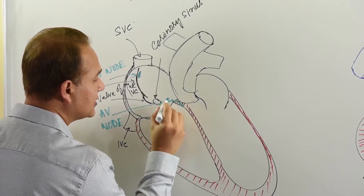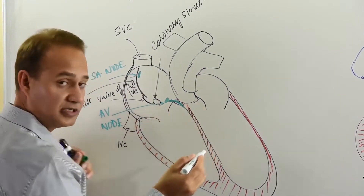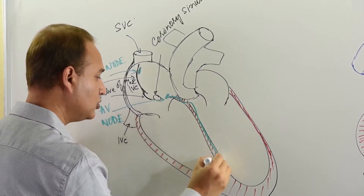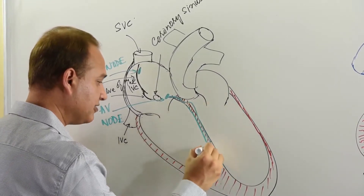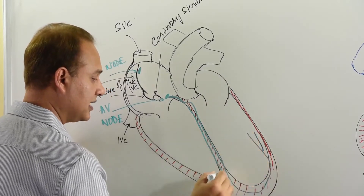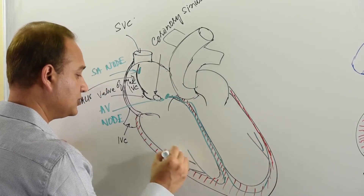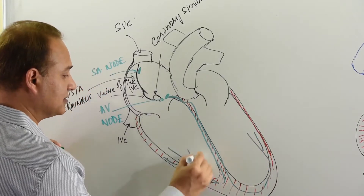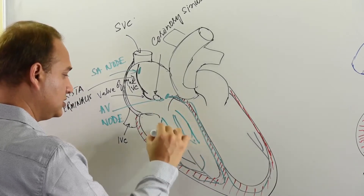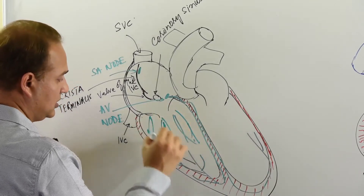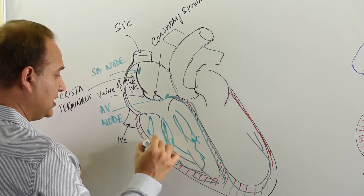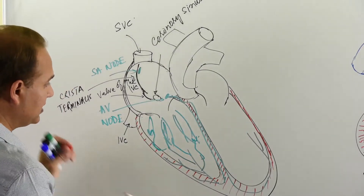Then we have the bundle of His, which is part of the conduction system coming out of the AV node. It splits into two branches in the interventricular septum and finally becomes the His-Purkinje system supplying the myocardium, including the papillary muscles.